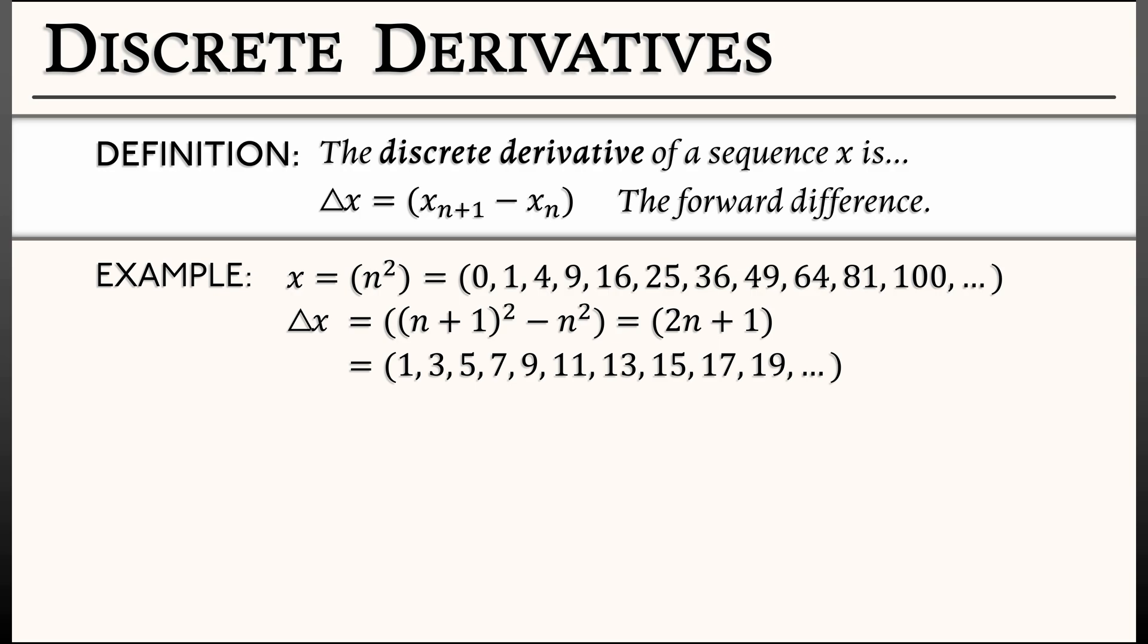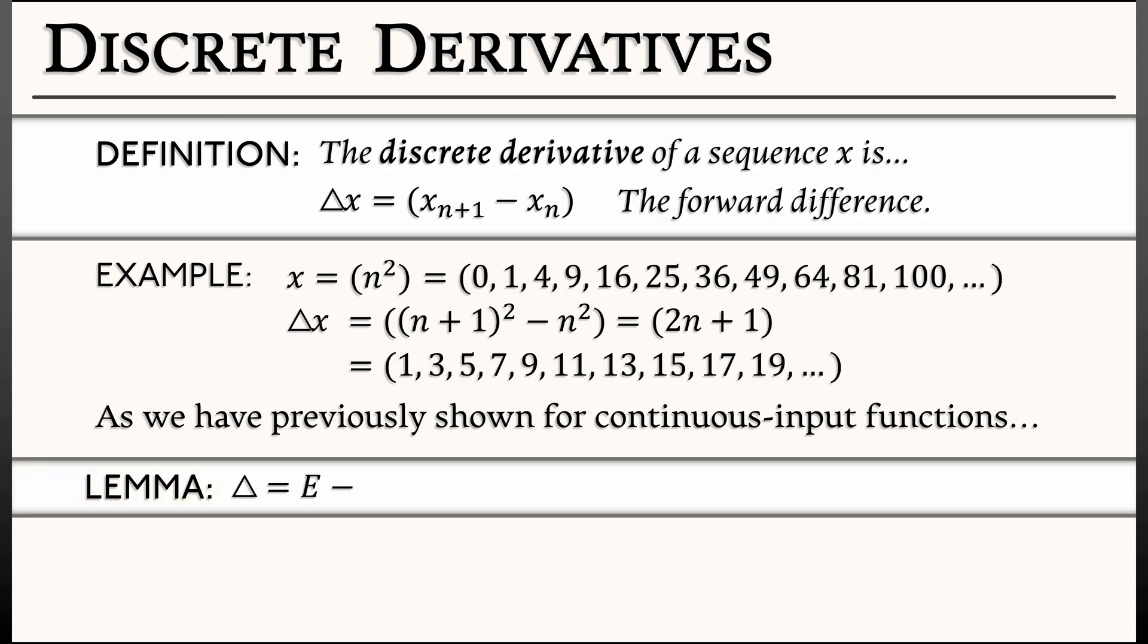This, of course, reminds us of what we talked about earlier with operators. And as we've previously shown, for continuous input functions, we have the lemma that delta, the discrete derivative, or the forward difference, is really e minus i.